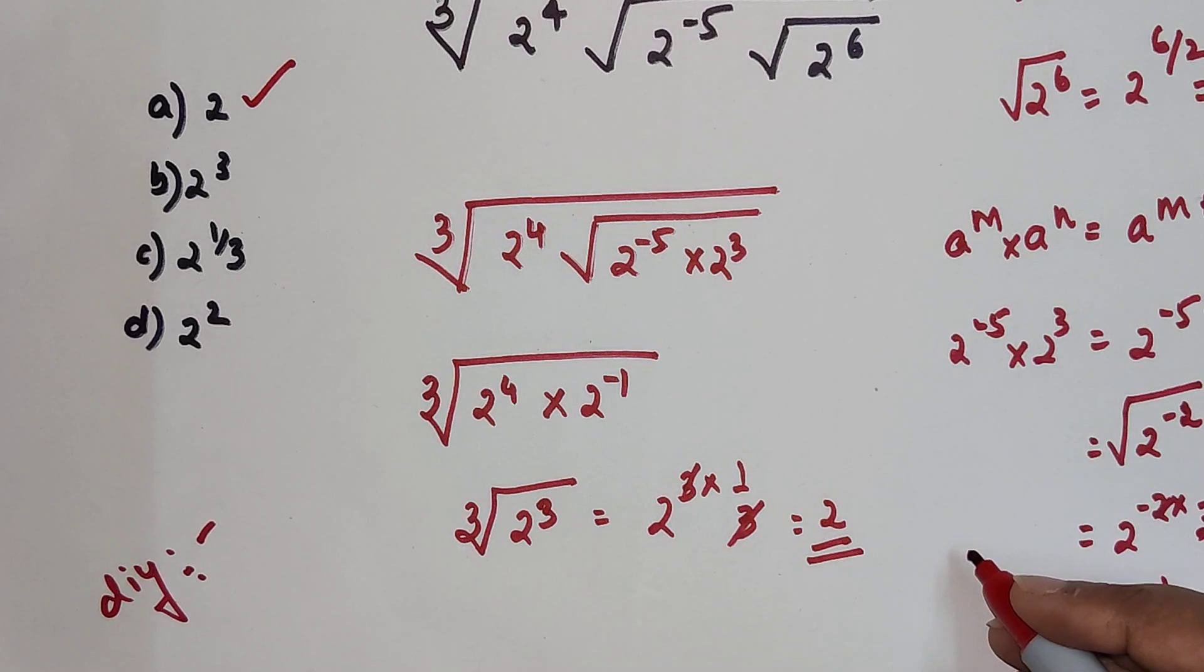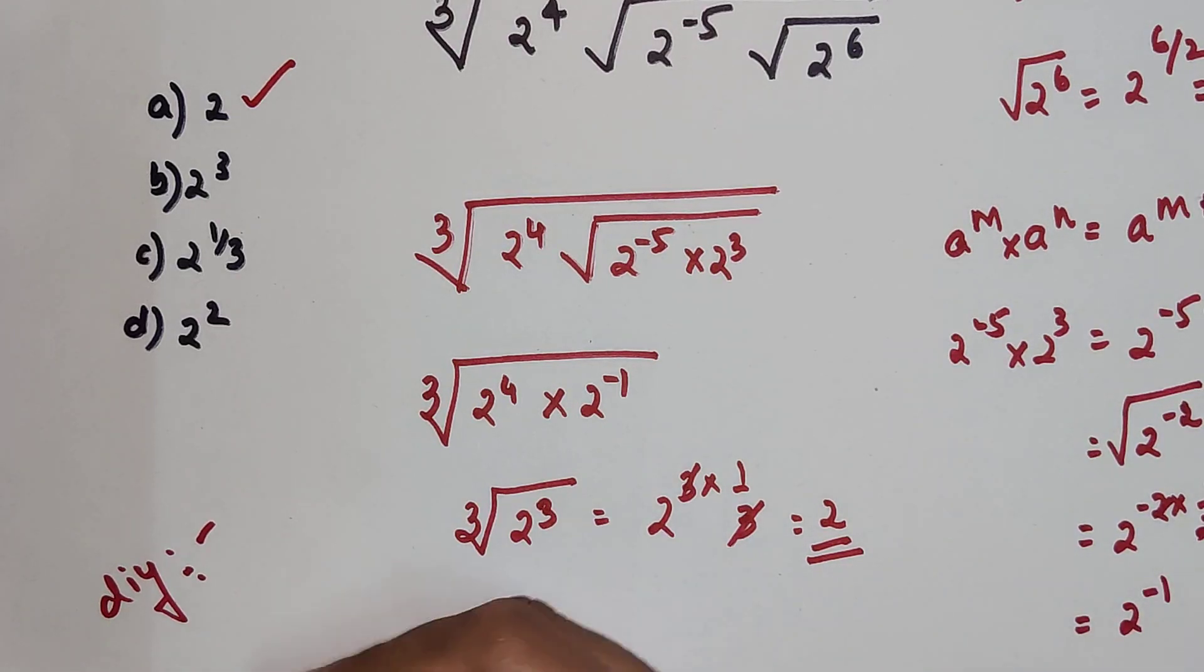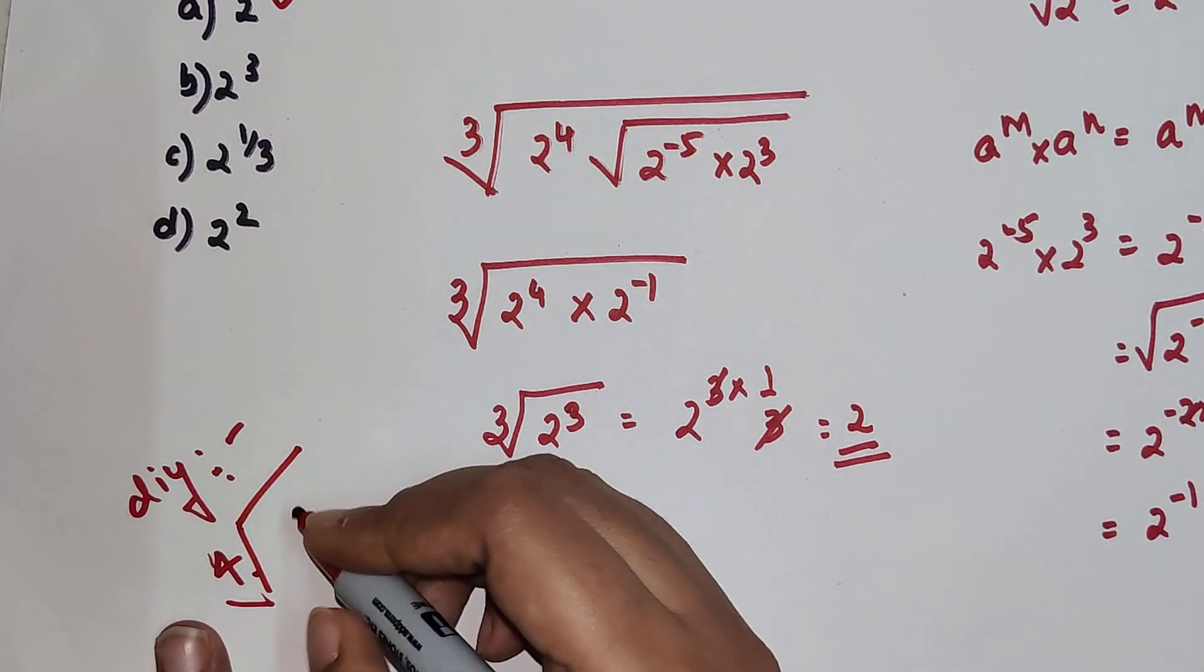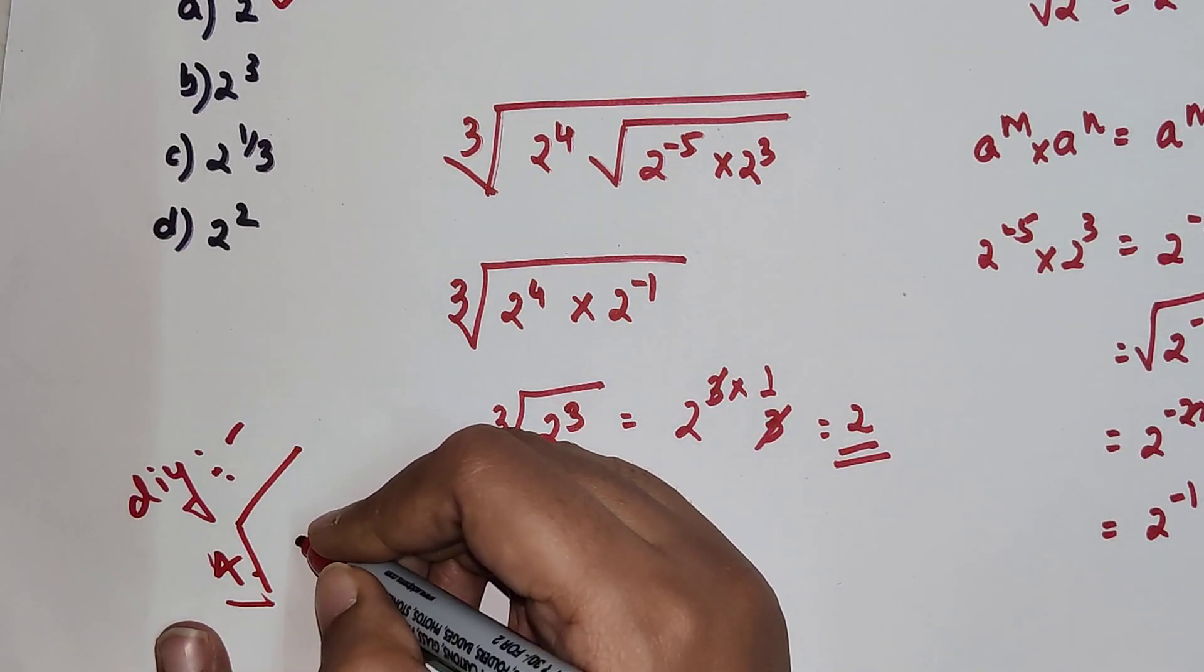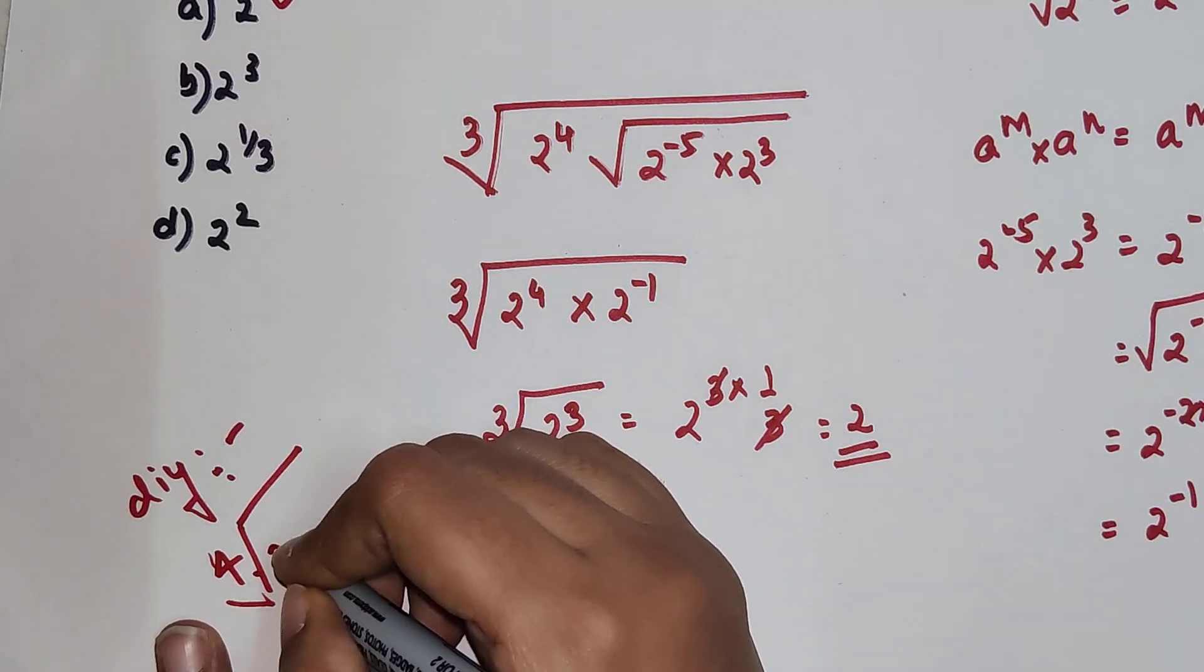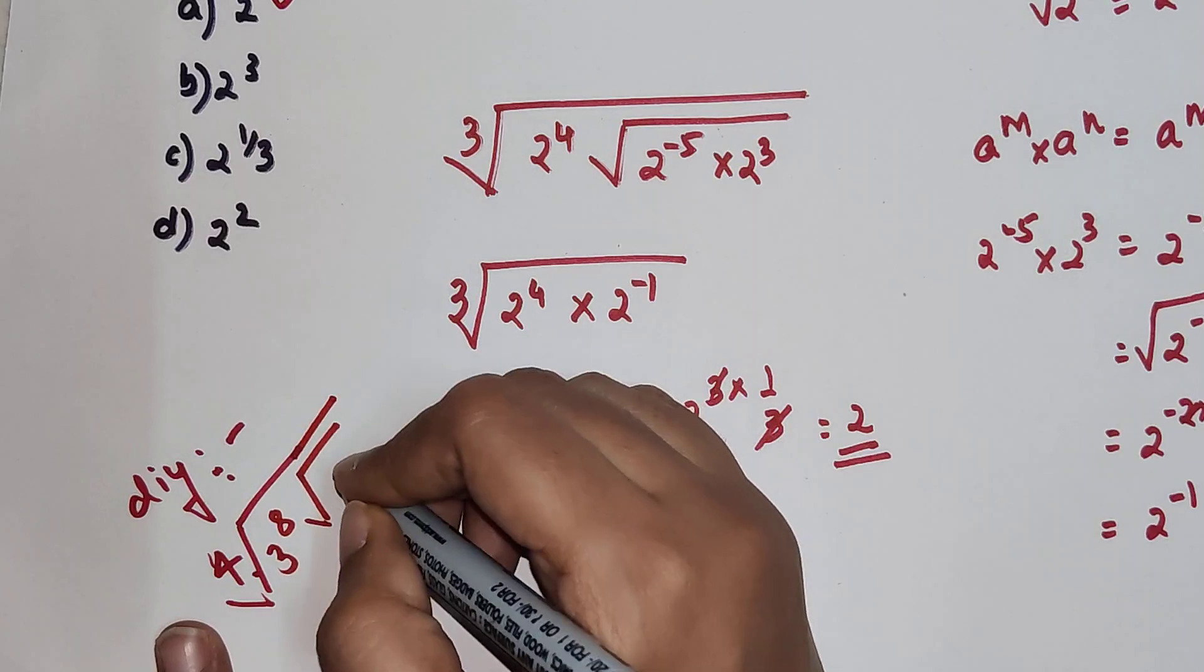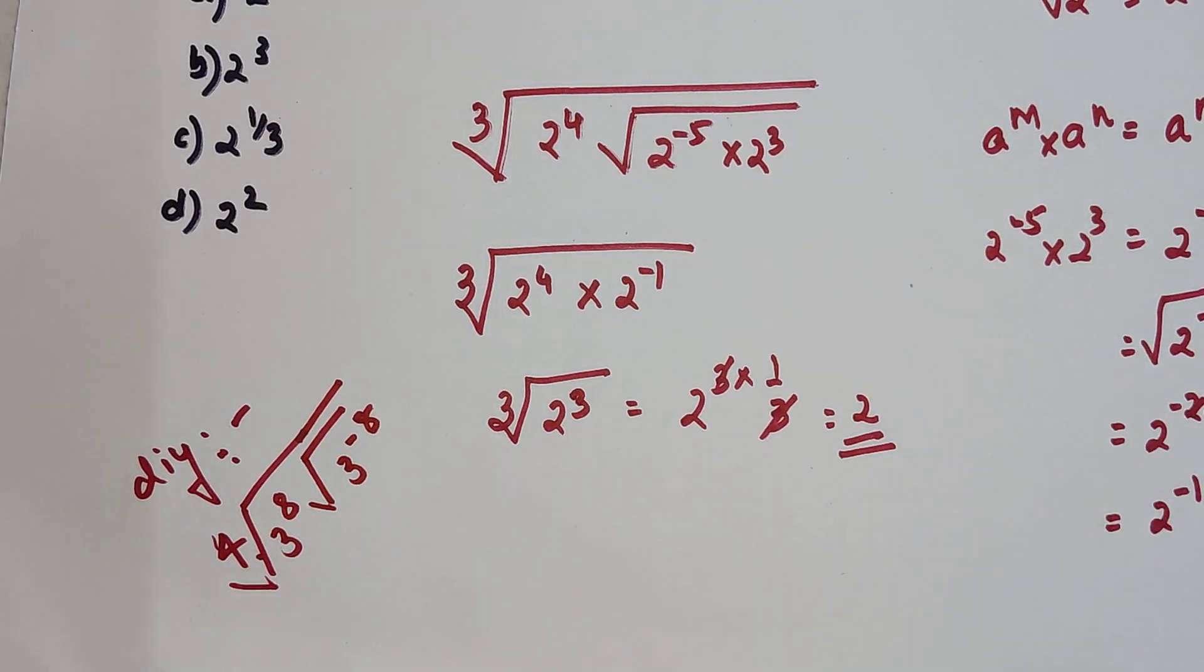So now over here let's come to your DIY. You will have to tell me what is the 4th root of 3 raise to 8 under a square root of 3 raise to minus 8. Do let me know your answers in the comment section.